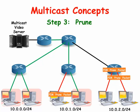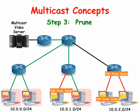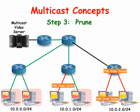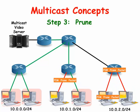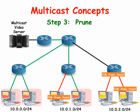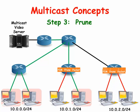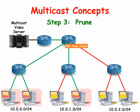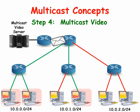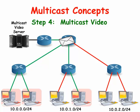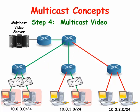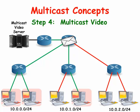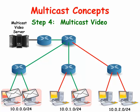Last-hop routers that do not contain client computers actively requesting multicast traffic on their directly connected LANs send PIM message packets to any upstream routers to let them know that they do not need to send the unwanted multicast packets — in other words, there are no end devices interested in the multicast traffic. The multicast streaming video server only needs to send out one video packet and the routers will forward each copy only to the interfaces leading to clients. The dense mode flooding and pruning process repeats every three minutes.